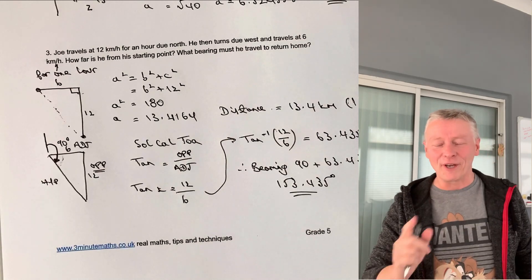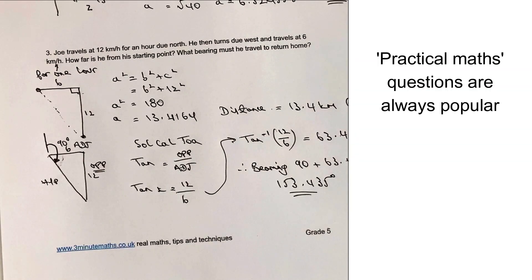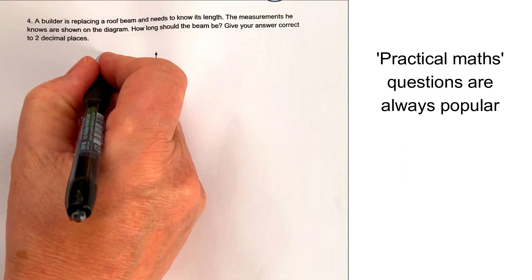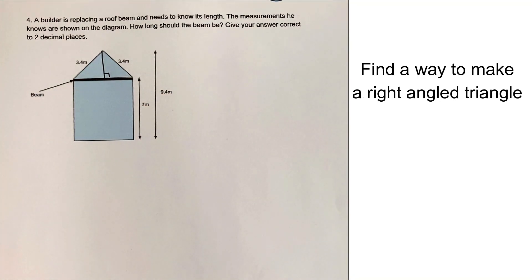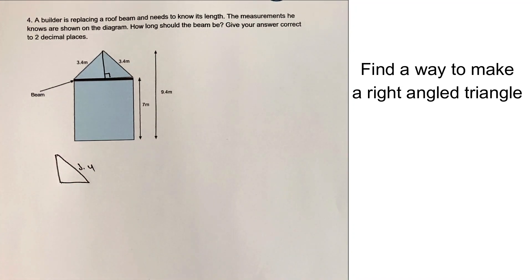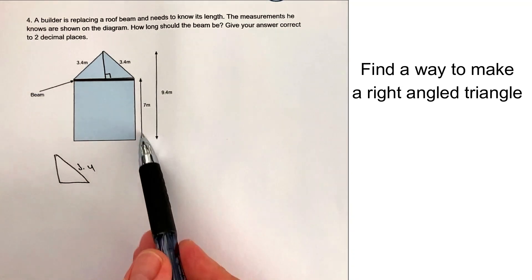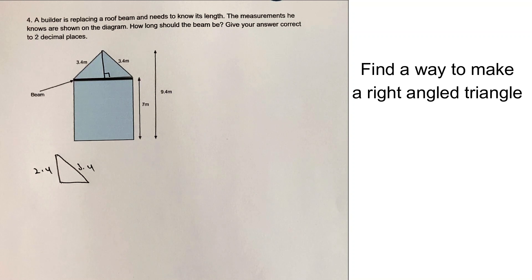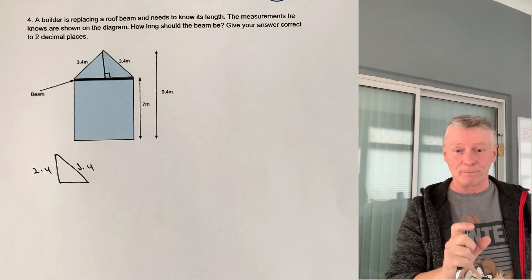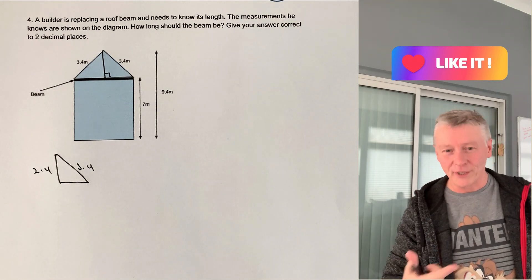Let's move on to the final question — it's not too bad and is more reflective of practical maths. A builder wants to know the length of a beam when building a house. Give your answer correct to two decimal places. We can make this into a right-angled triangle. The hypotenuse is 3.4, and the height is the difference between 9.4 and 7, which is 2.4. Using Pythagoras, I can calculate the length of half the beam, then double it for the total.